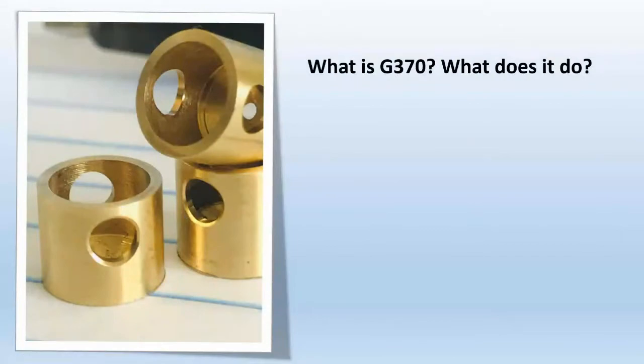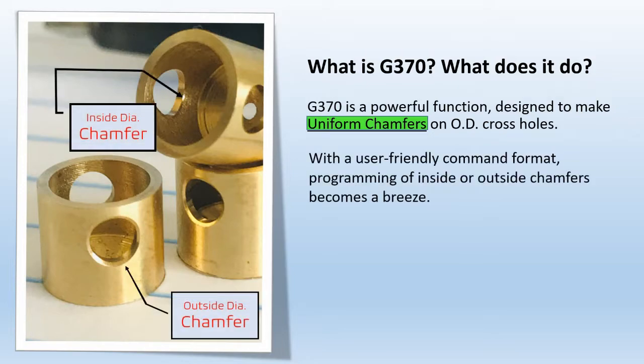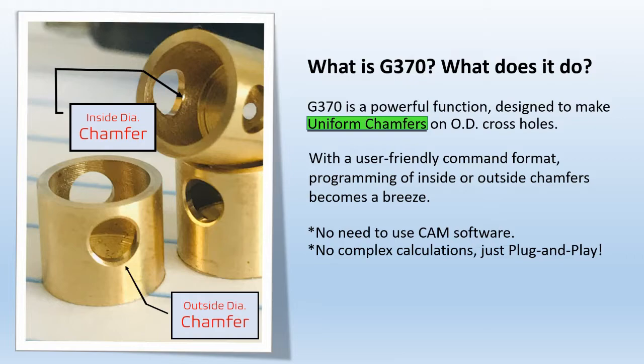What is G370? G370 is the code we use specifically to do 3D chamfering. It's a powerful function designed to make uniform chamfers on OD and cross holes. With a user-friendly command format, programming of inside or outside chamfers becomes a breeze. No need to use CAM software, no complex calculations, just plug and play.